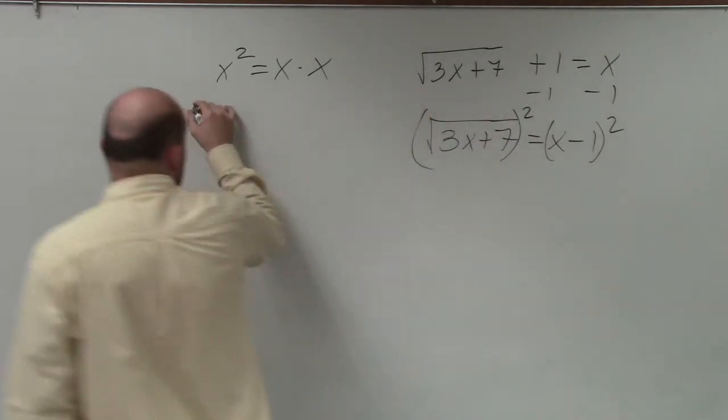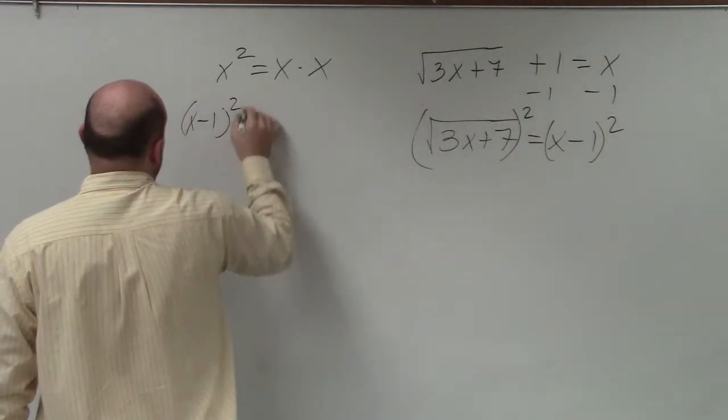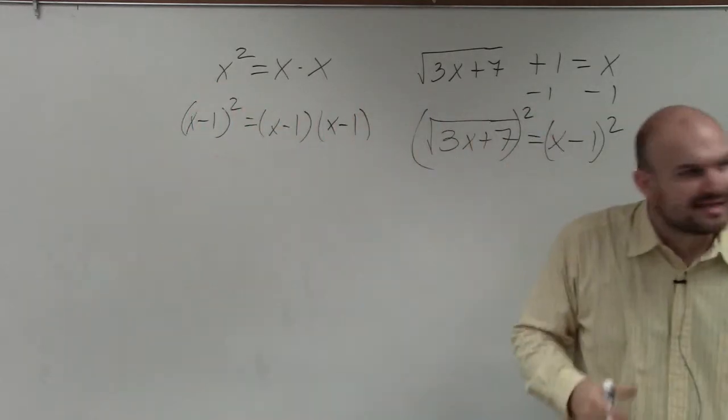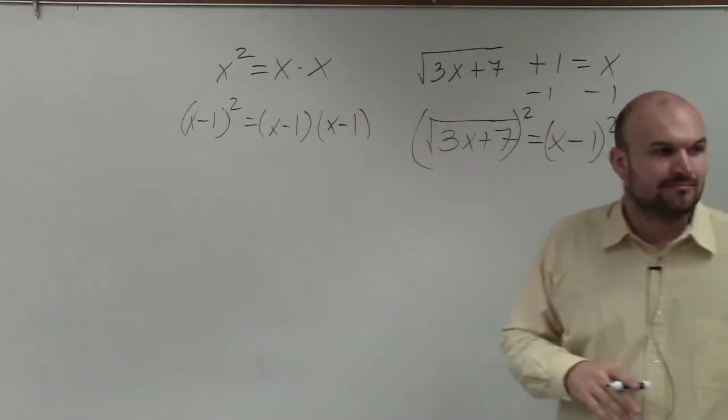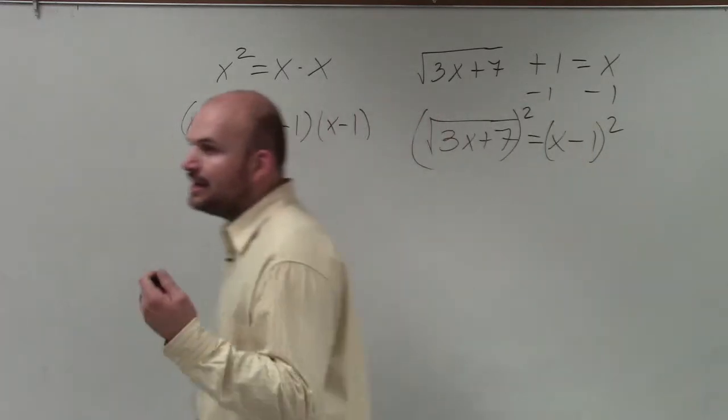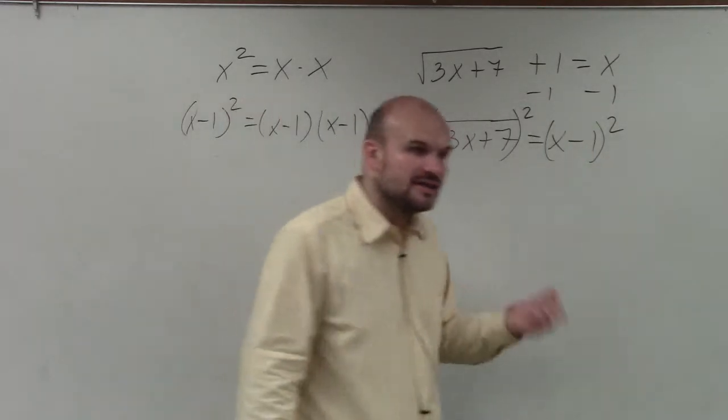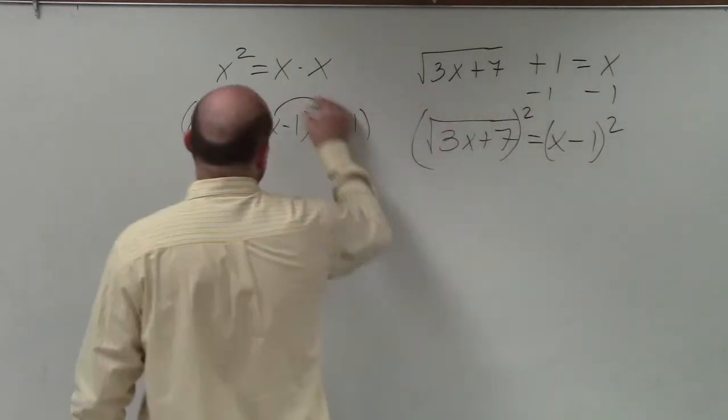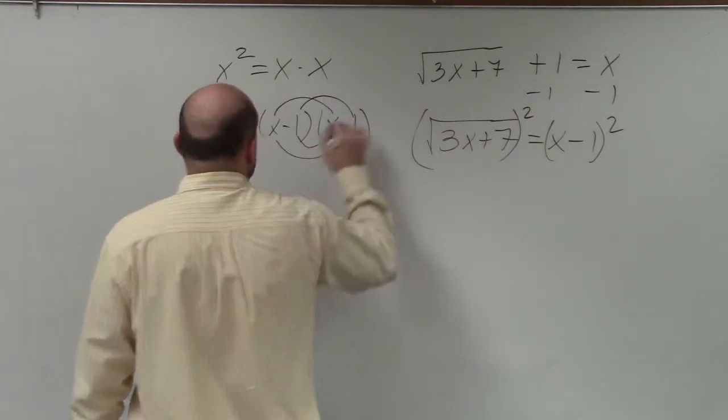So if I have x minus 1 squared, that means x minus 1 times x minus 1. It does not mean x squared plus 1, or it does not mean 2x, or all the other things we could get. x minus 1 squared is x minus 1 times x minus 1, meaning we now have to apply FOIL.